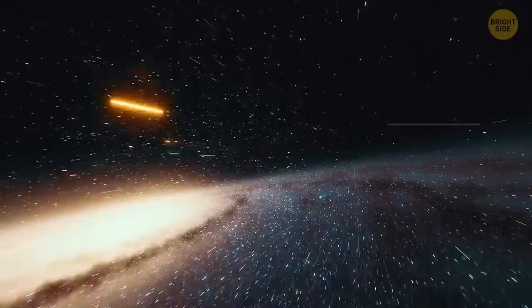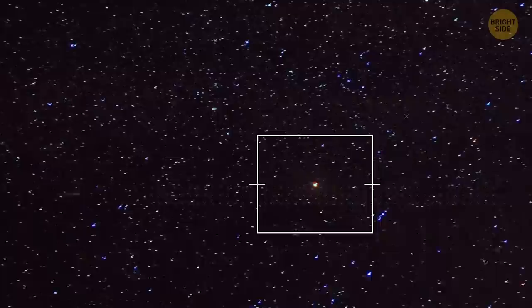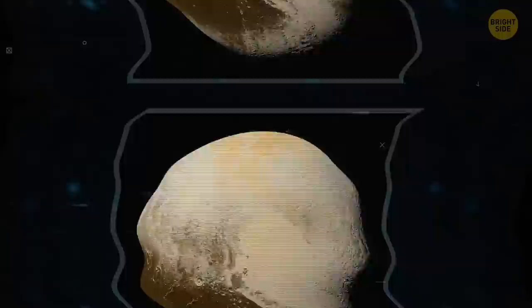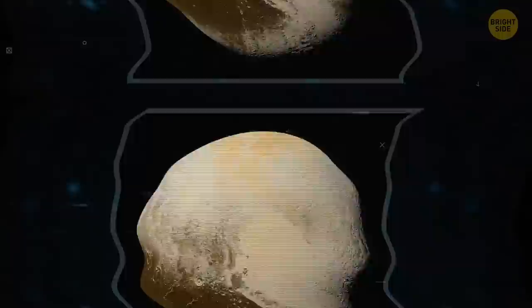It still took the probe almost a decade to reach its destination. That's how far away the tiny planet is. In fact, Pluto is nearly 40 times the distance from Earth to the Sun. If you were there looking up at the sky, you'd see the Sun as a tiny dot like any other star in the sky. Once New Horizons finally reached Pluto in 2015, it got close enough to get some incredible pictures of the surface. It also collected important data and observations, like those strange red spots and that heart-shaped region.